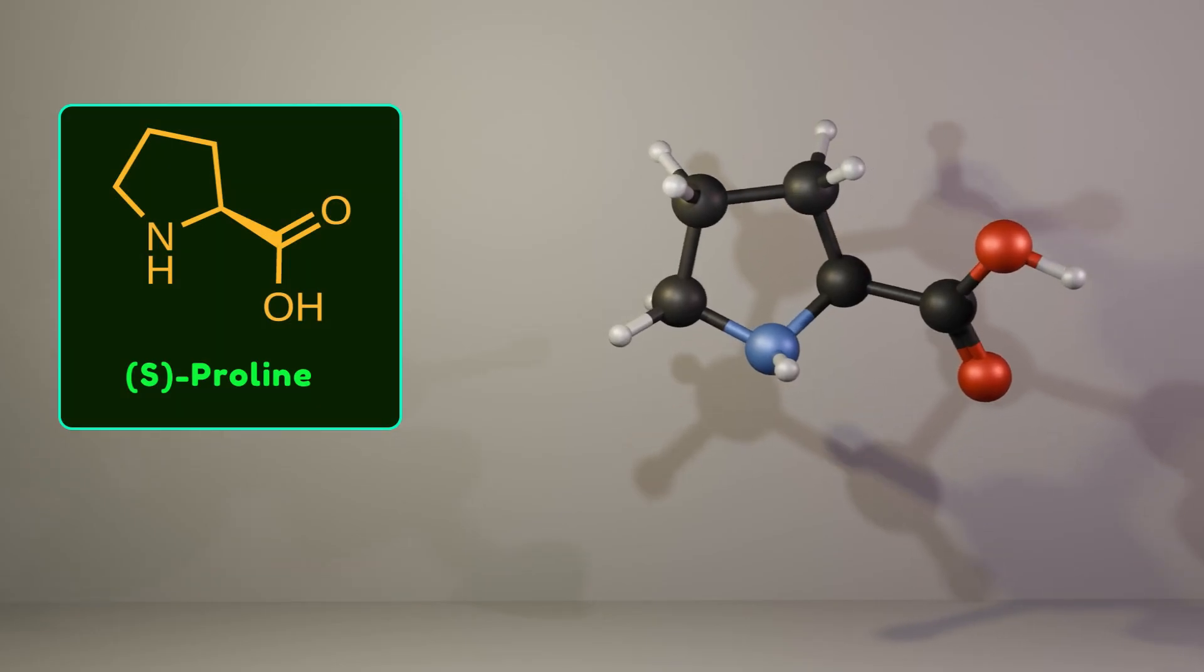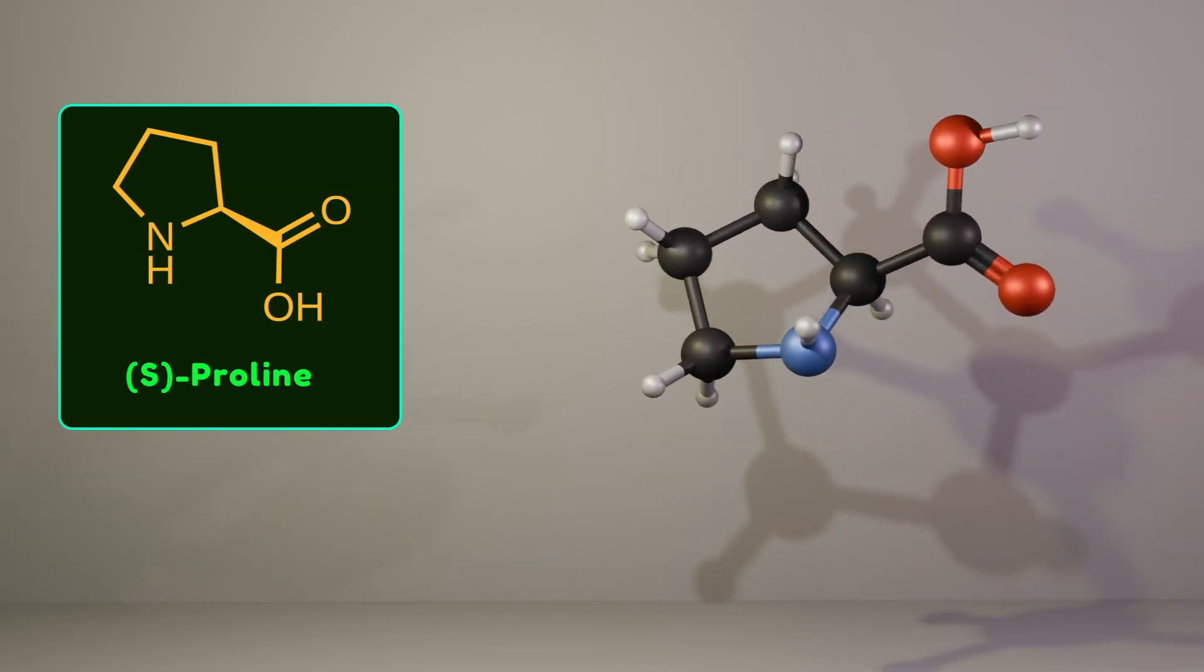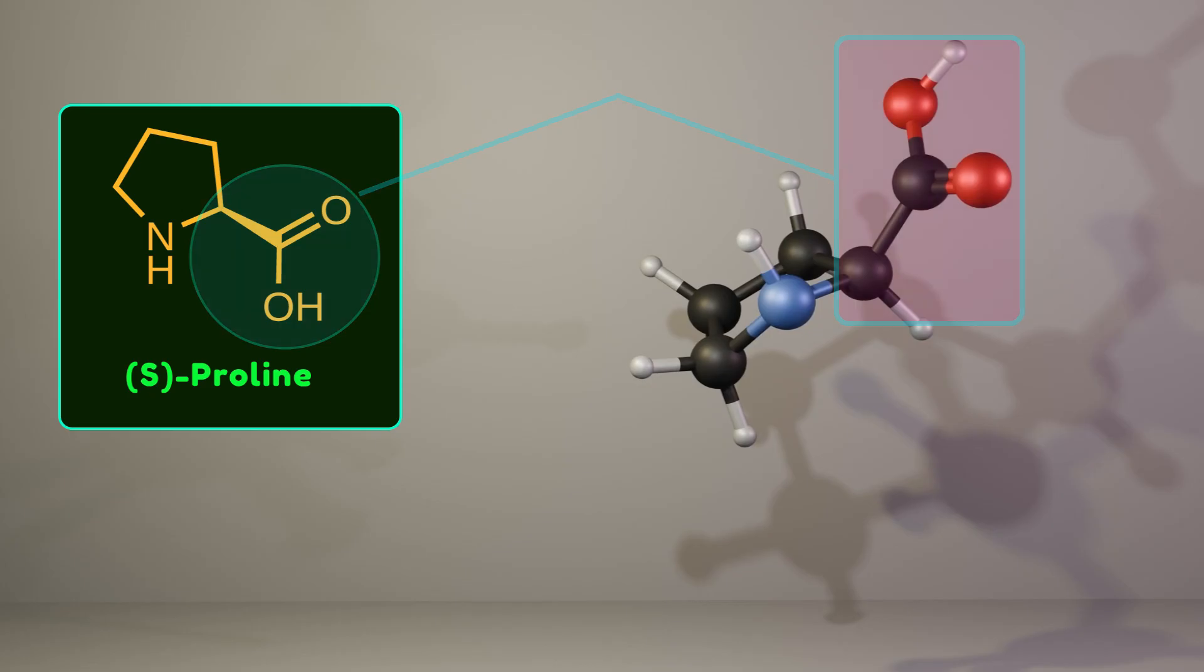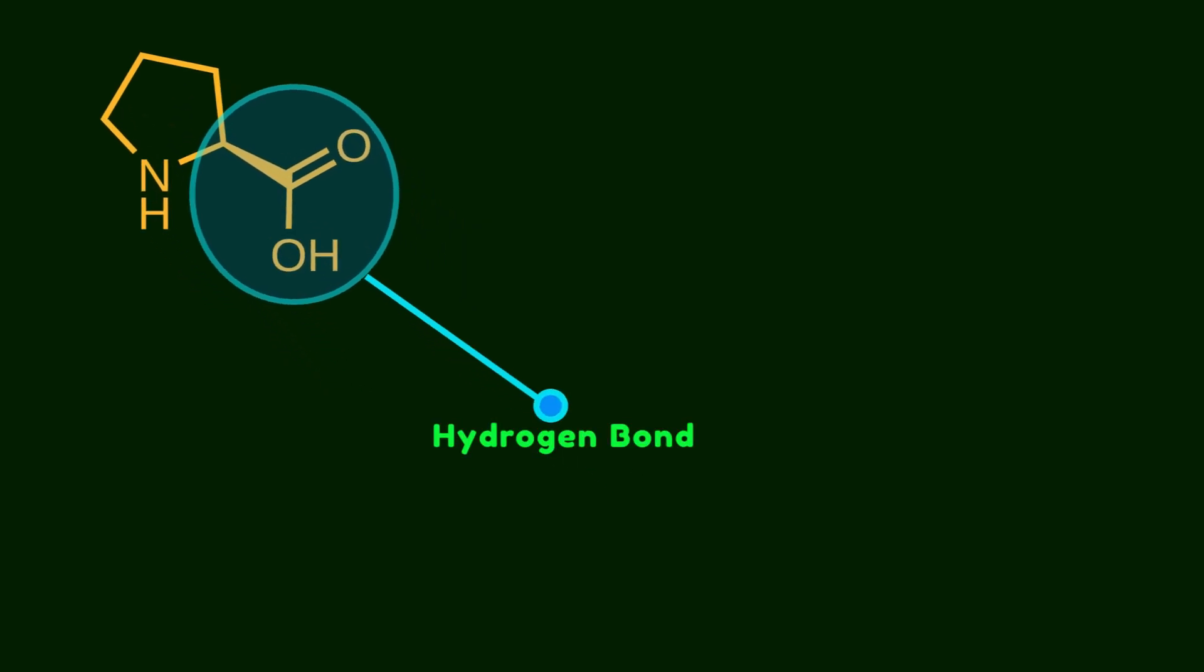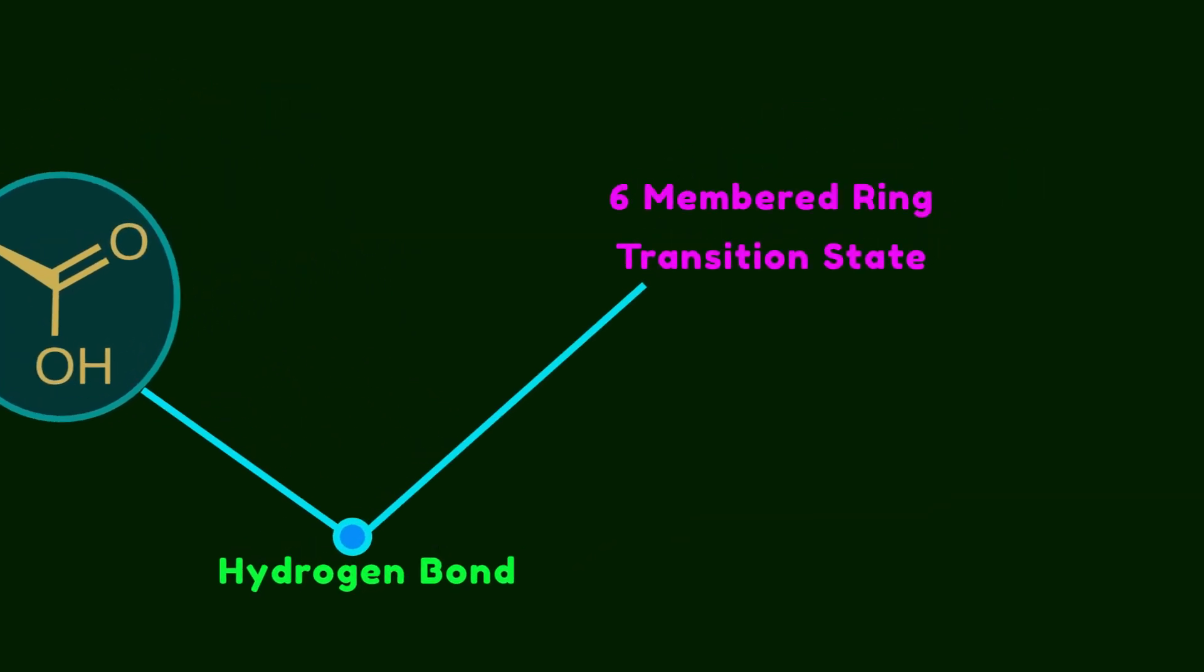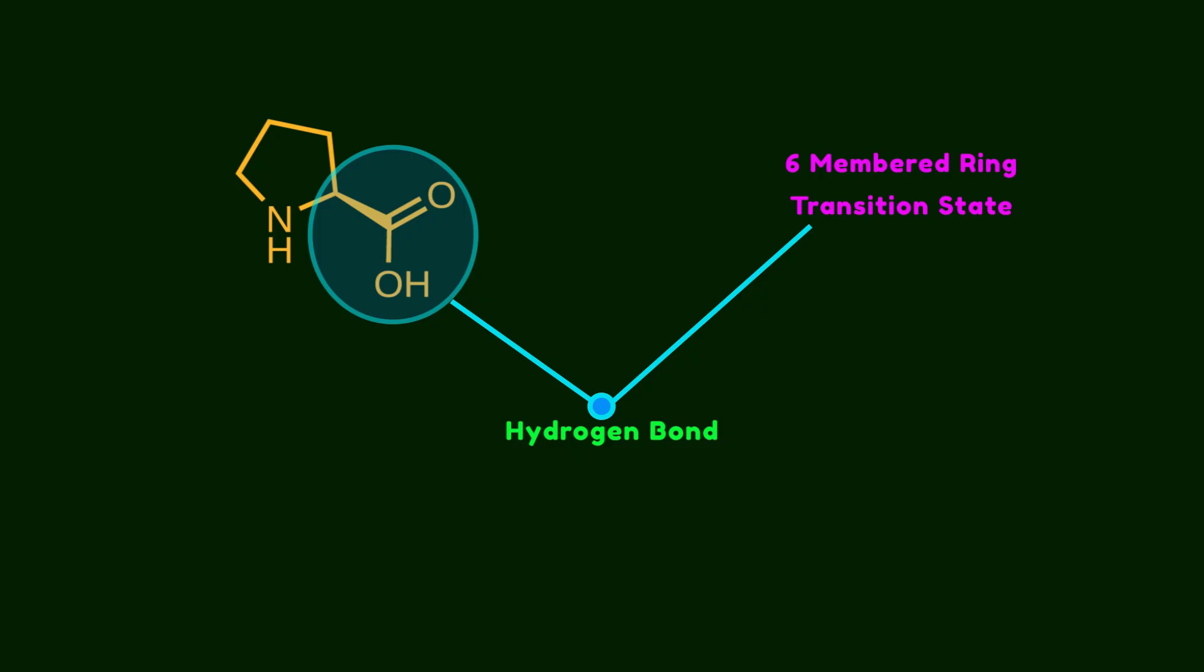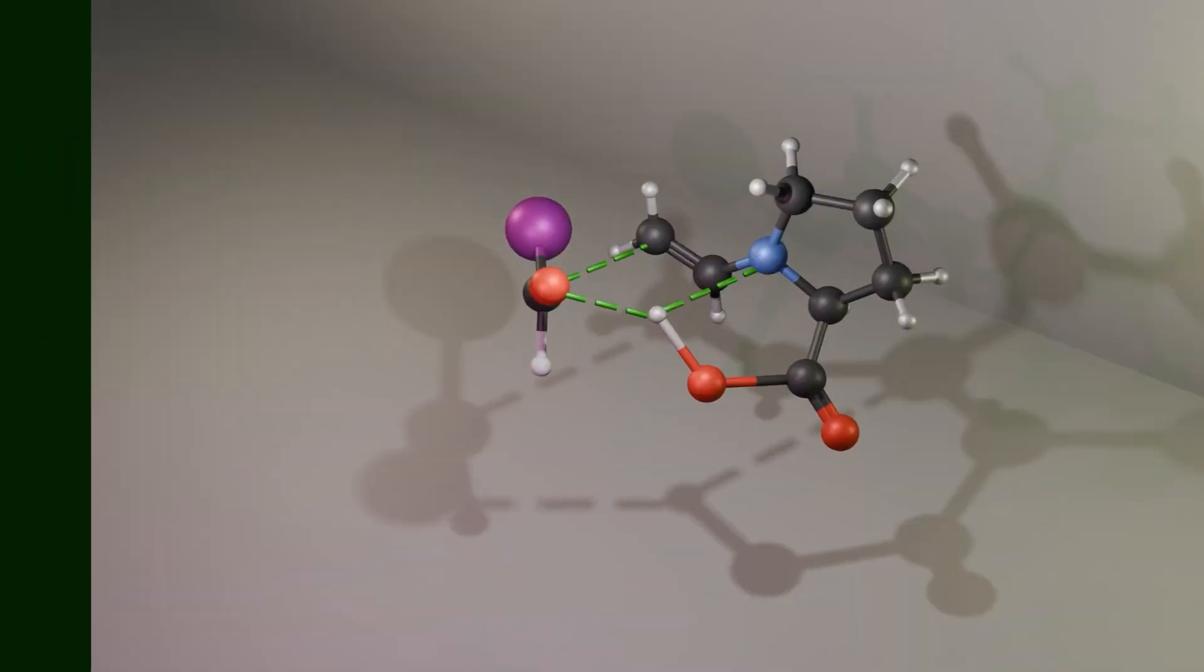Proline is a naturally occurring amino acid that's widely used in asymmetric aldol reactions, mainly because it has a chiral center at its two position along with a carboxylic acid group. Now let's dive into the mechanism to see how it works. In the aldol reaction, proline's carboxyl group plays a key role because it can form a hydrogen bond that organizes a six-membered ring transition state. To make this clear, let's take a look at the 3D model.